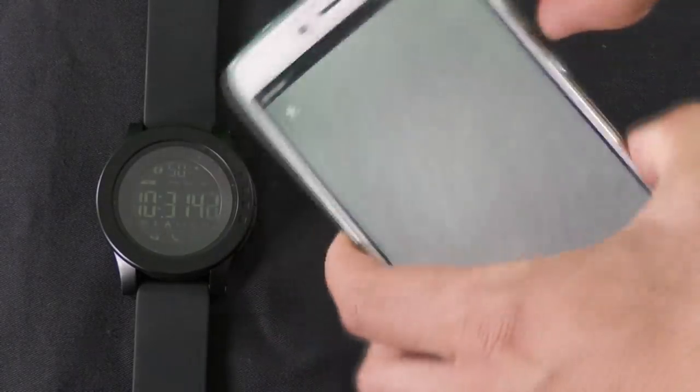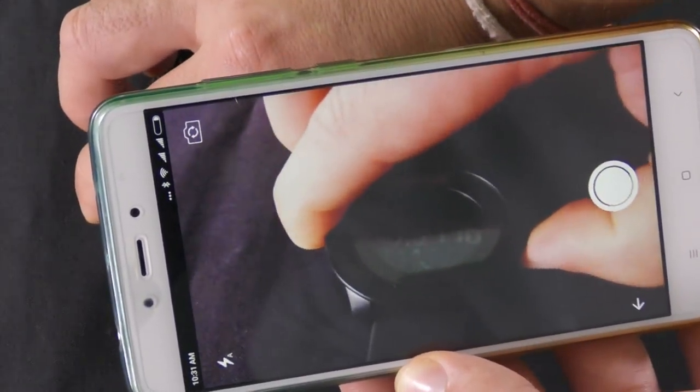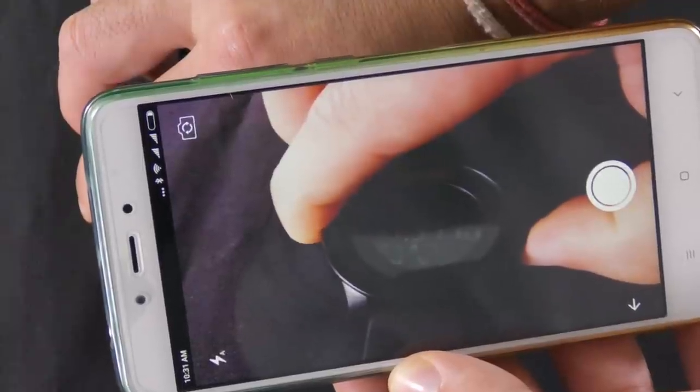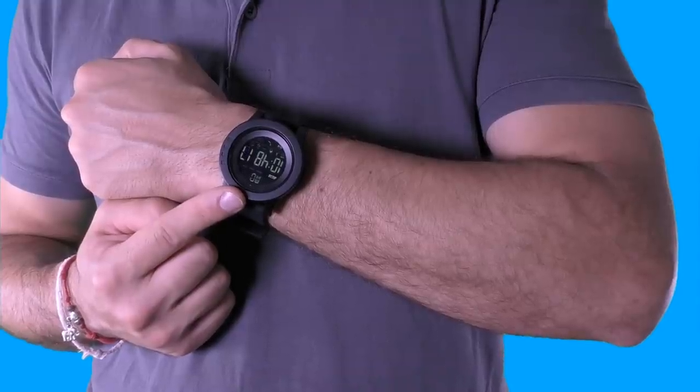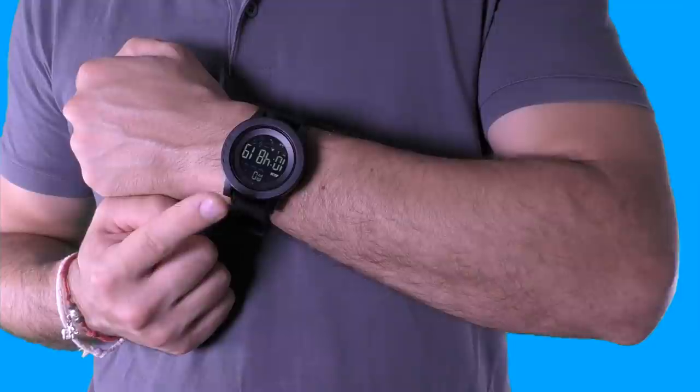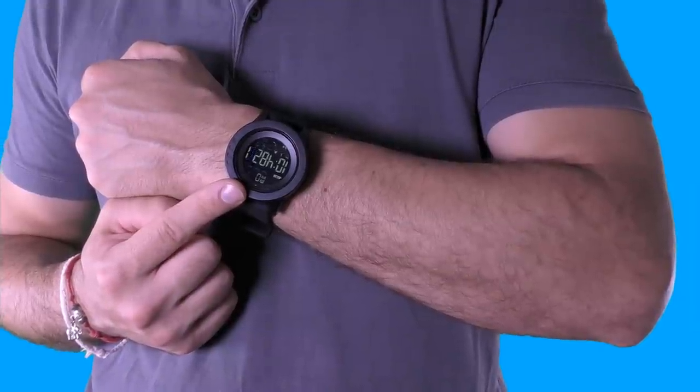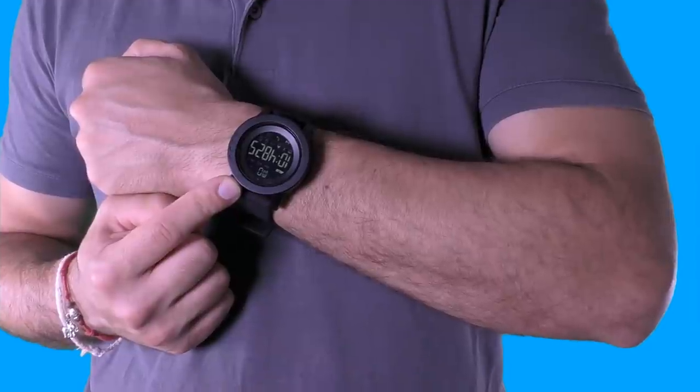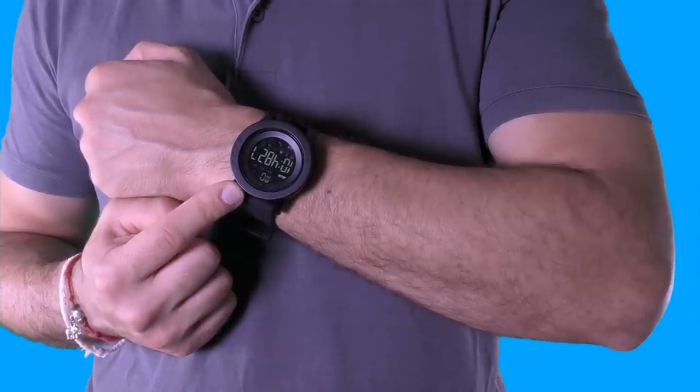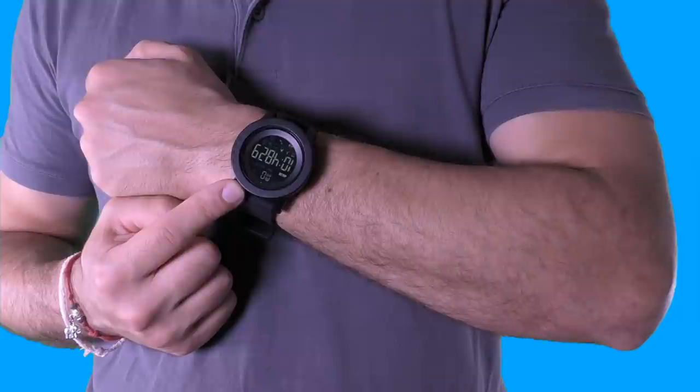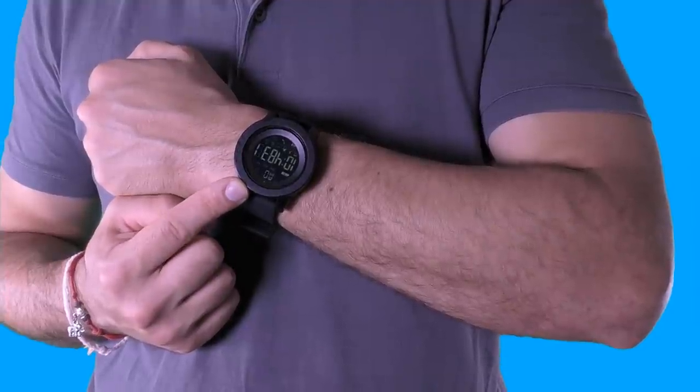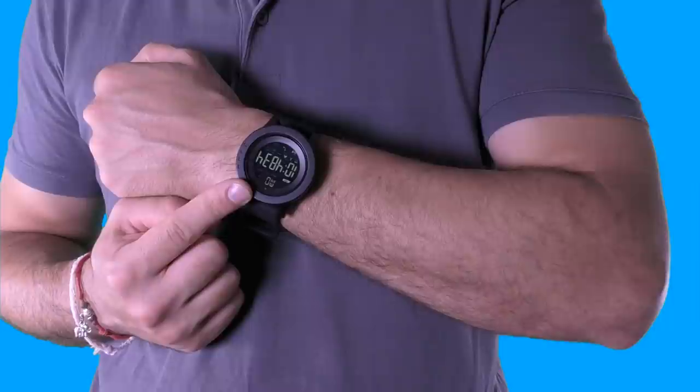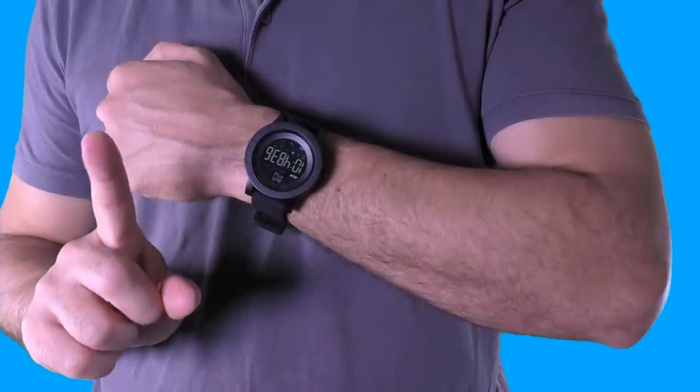Both the reminders and camera features didn't work for me. The watch didn't notify me about phone calls or messages that I received, and the camera seems to take a photo but it doesn't appear anywhere on my smartphone. I'm not sure if this is a problem with my smartphone or the app that can be solved by installing an update, or if there's any other reason for that. I will try to figure it out and update you about that in the description to this video.